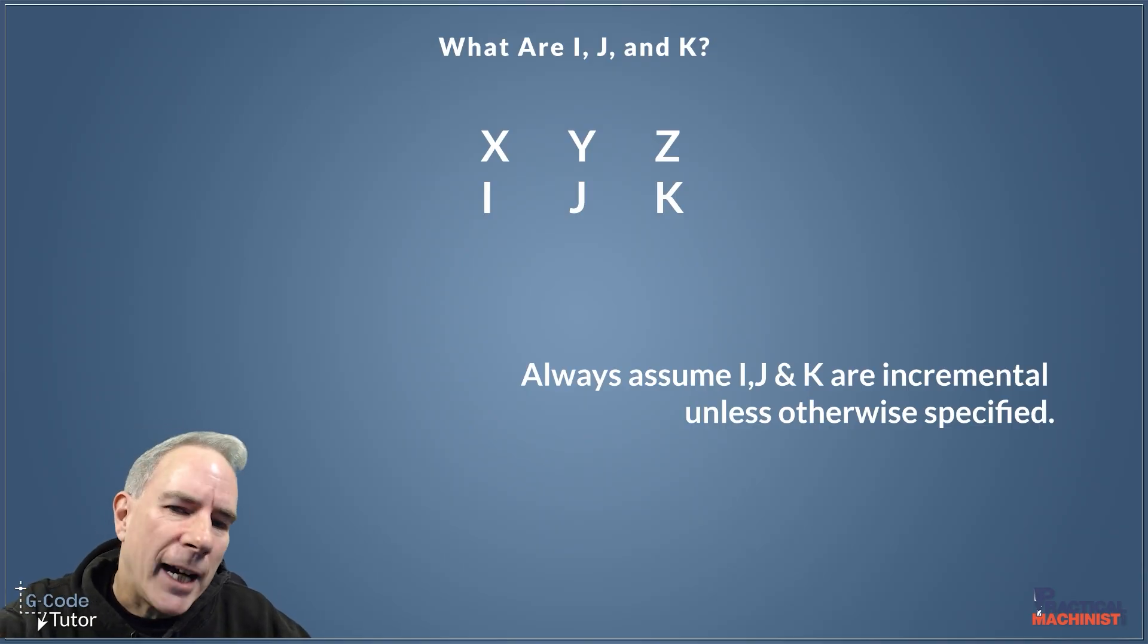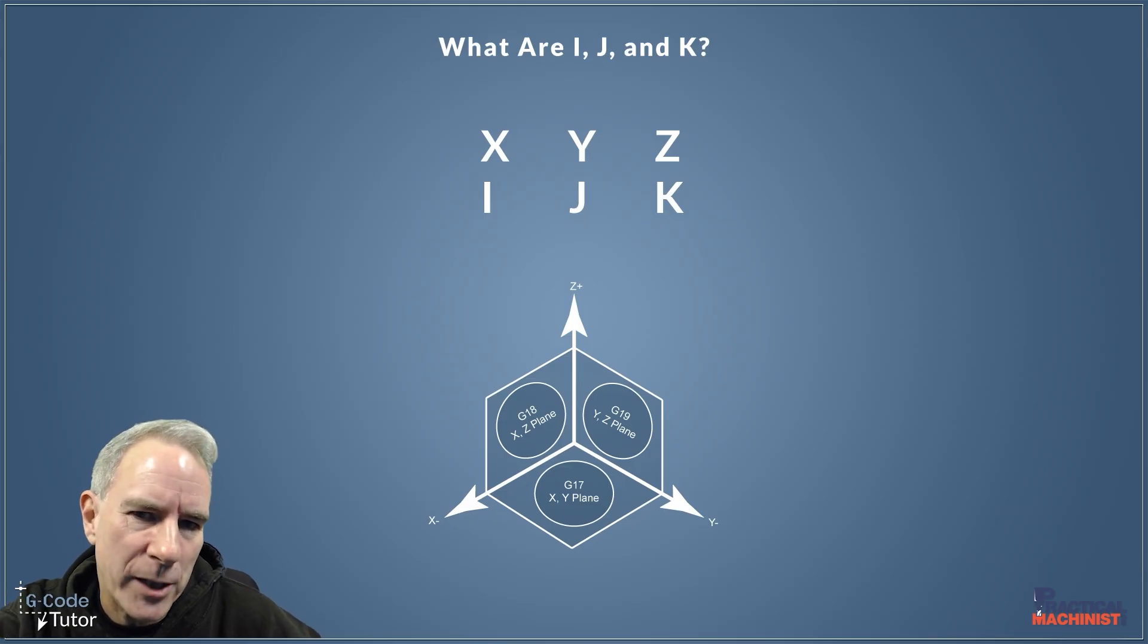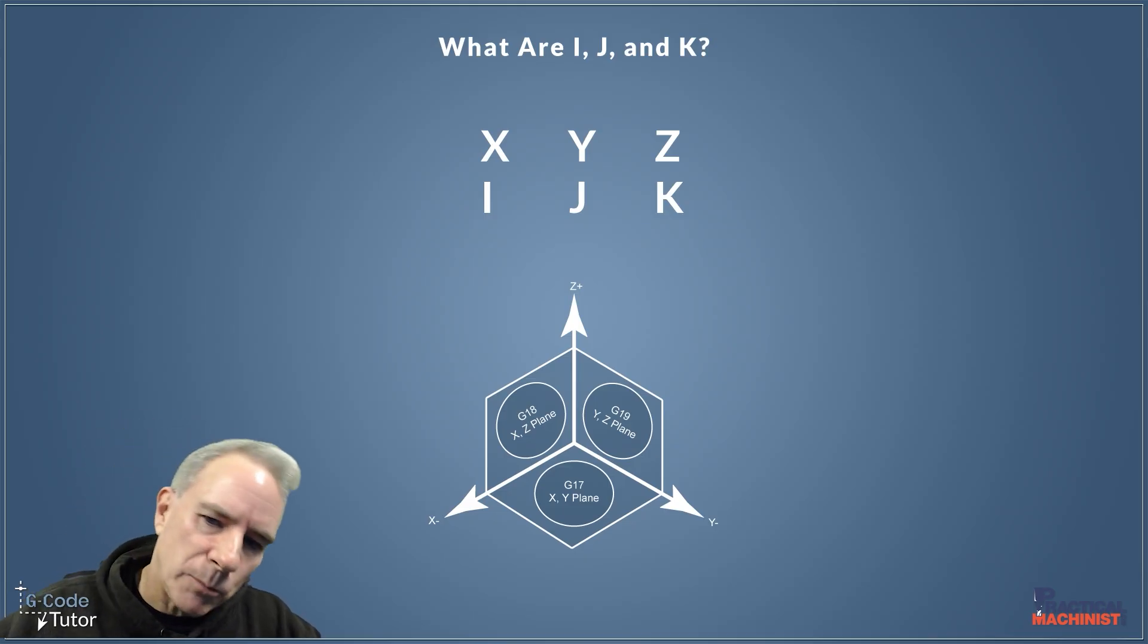So to use I, J and K, we generally have to tell the machine what plane we are working in for this to work. And we would do that by G17, G18, and G19. As we can see on this diagram here, we can see which planes select which with those G codes. So this is also relevant on milling machines as well.